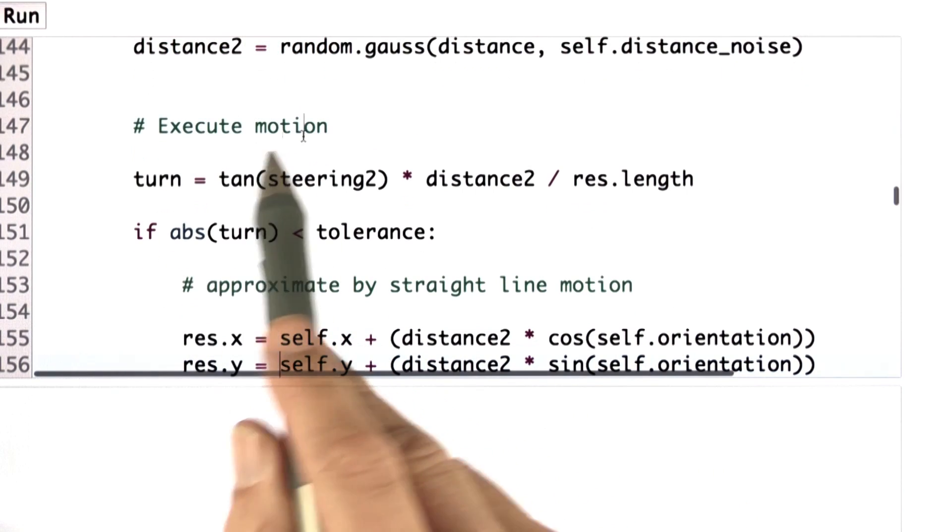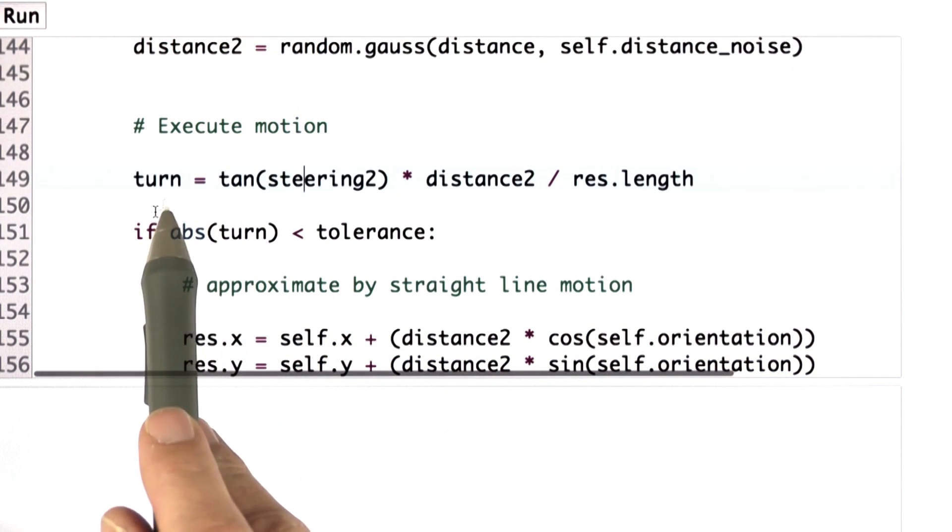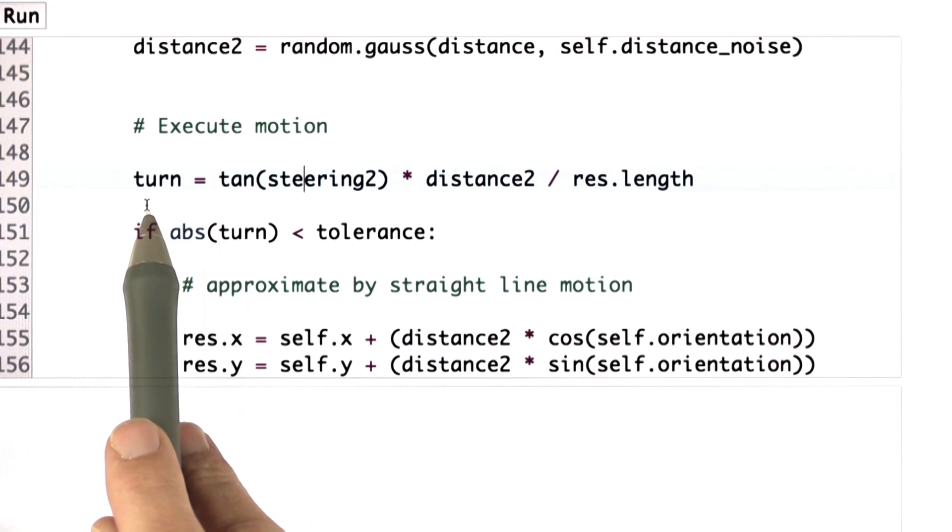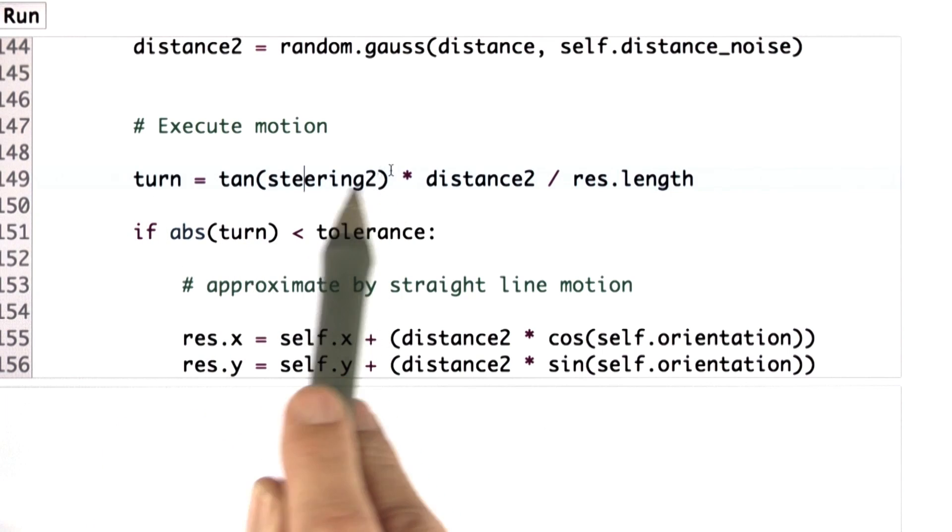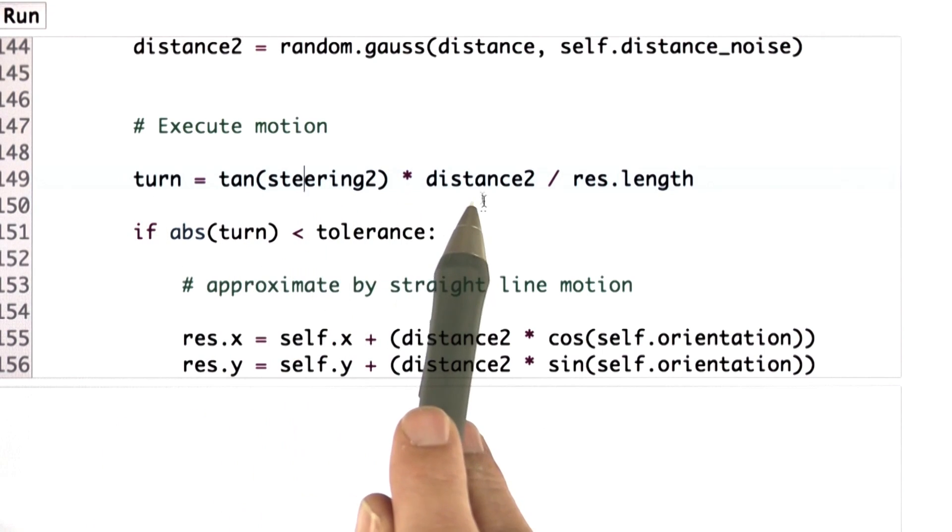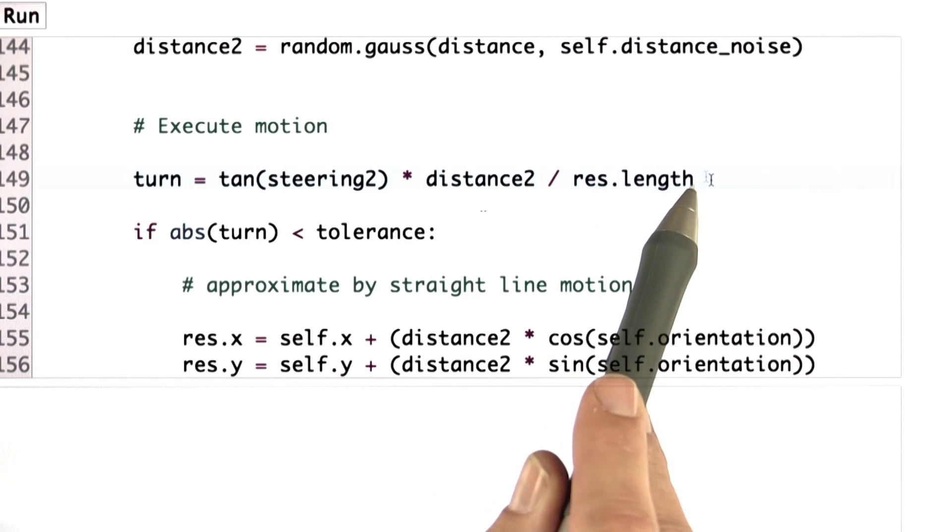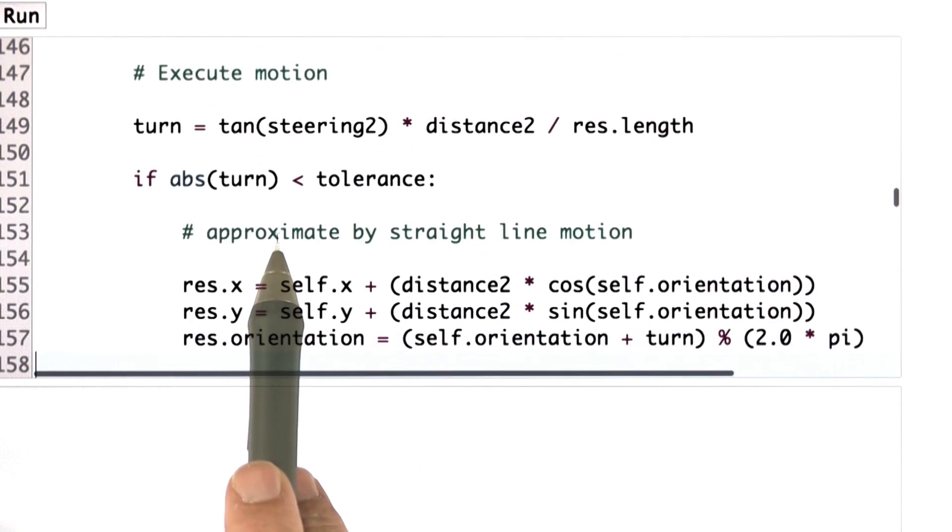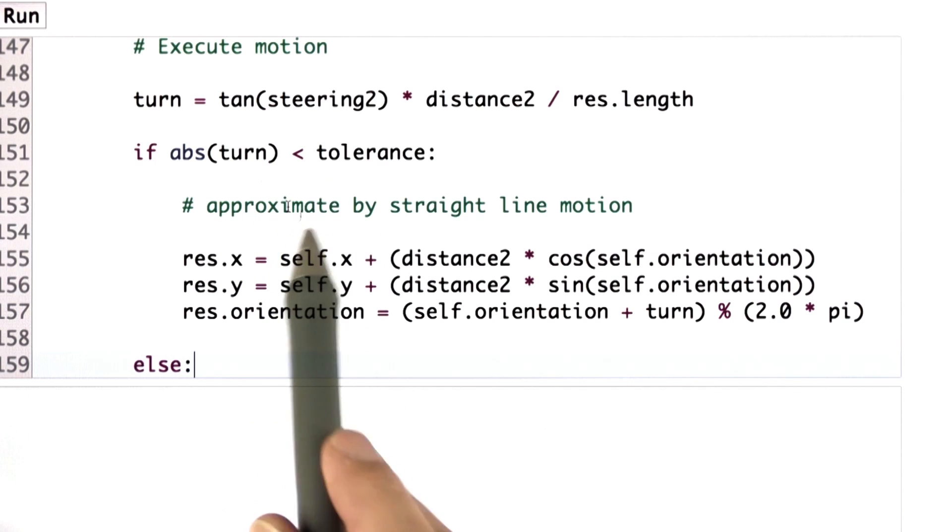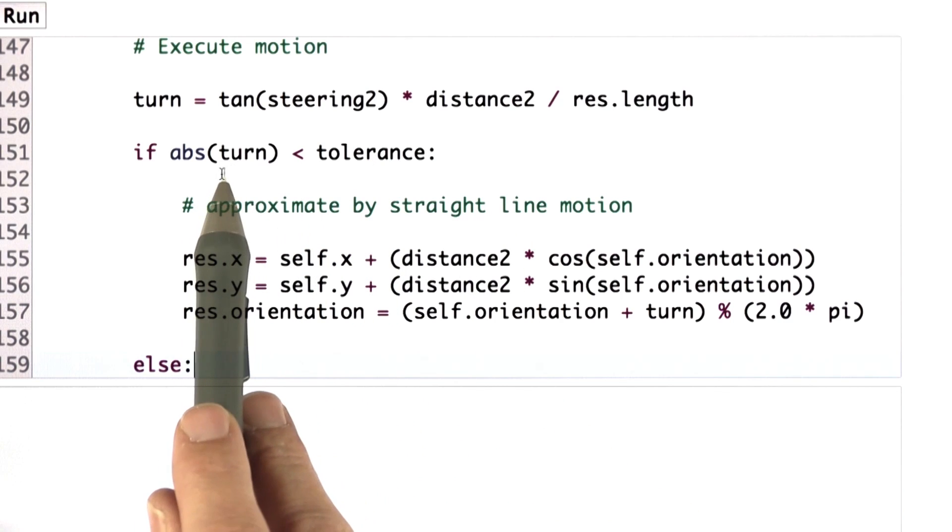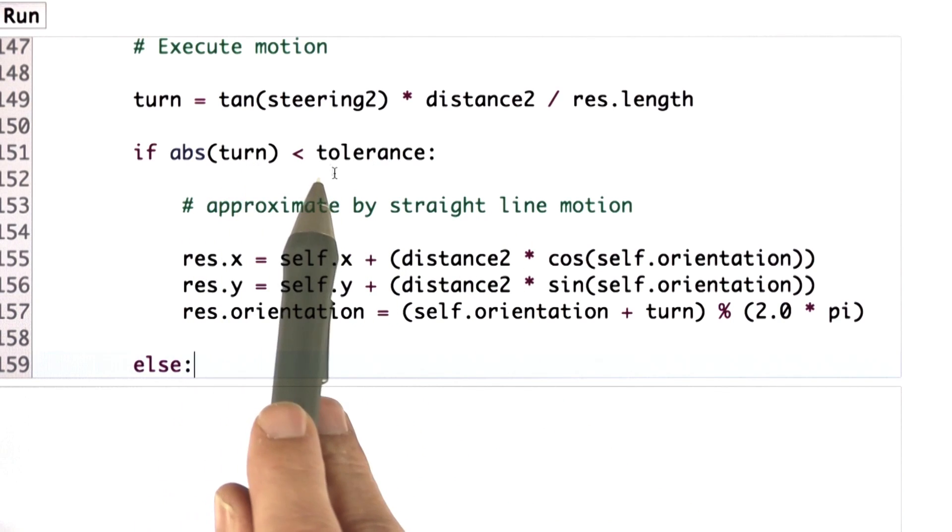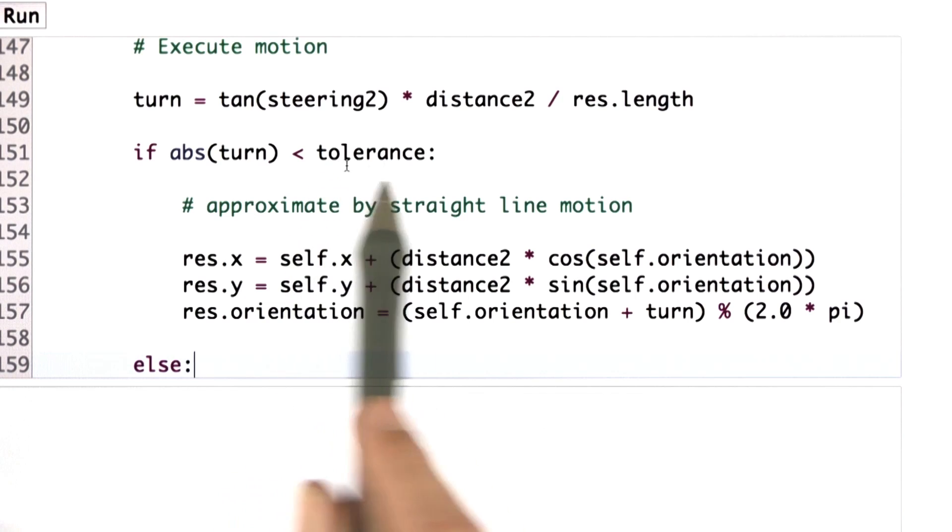And as I go down further, here's my execution of motion. My turning angle, I call it turn. This is the tangent of the noisy steering times the distance moved divided by the robot length. And as in my explanation of this question, I'm going to branch and see if my turn is significant enough. If it's smaller than tolerance, and tolerance was set above to 0.001.